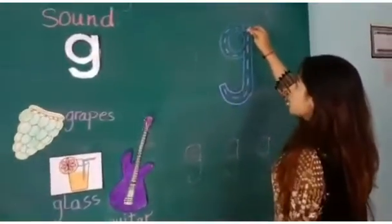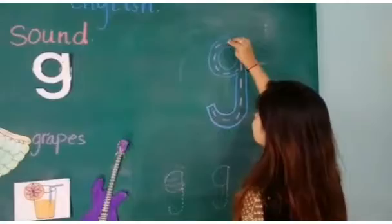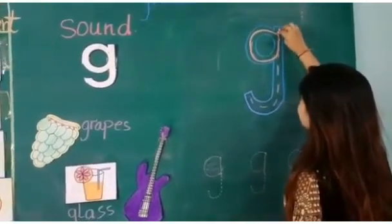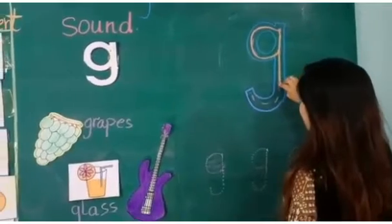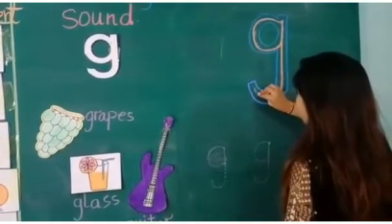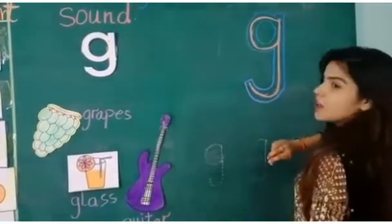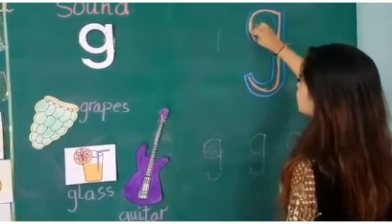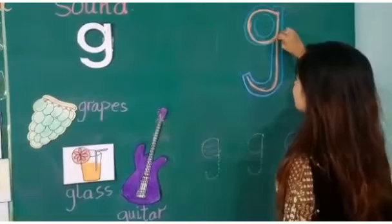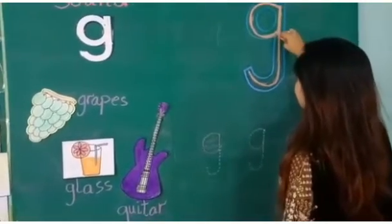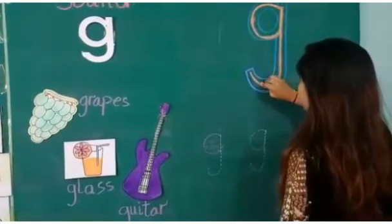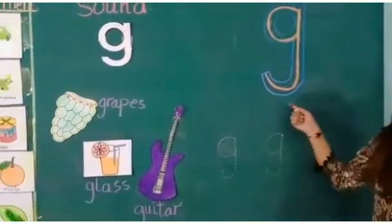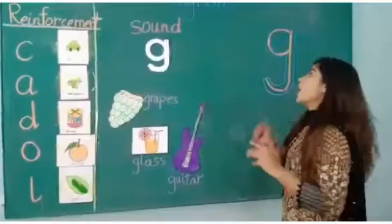Put your pencils on the dot. G is make a K — go up, come down, and make a round. Well done. Do it once again: G is make a K, go up, come down, and make a round. Well done. This is sound G. Well done kids.